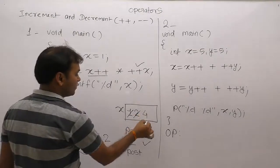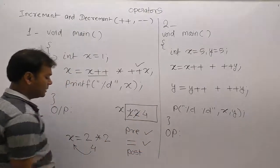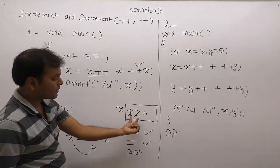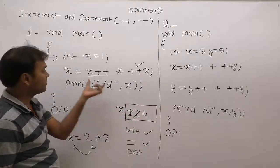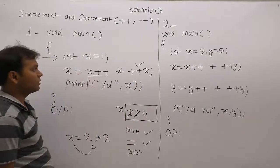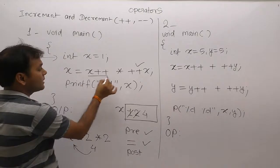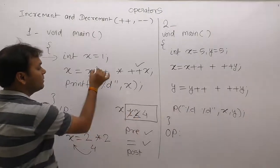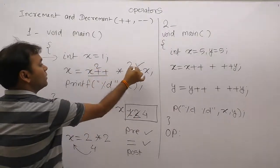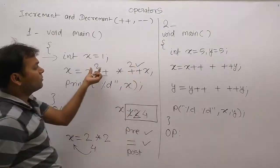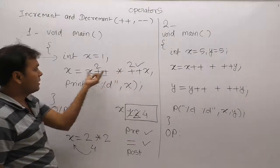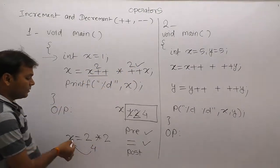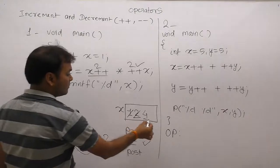After the pre-increment, x's value had become 2. Then, in the assignment step, all occurrences of x are replaced by the current value 2. So 2 multiplied by 2 becomes 4, and then 4 is assigned to x. Now x becomes 4.